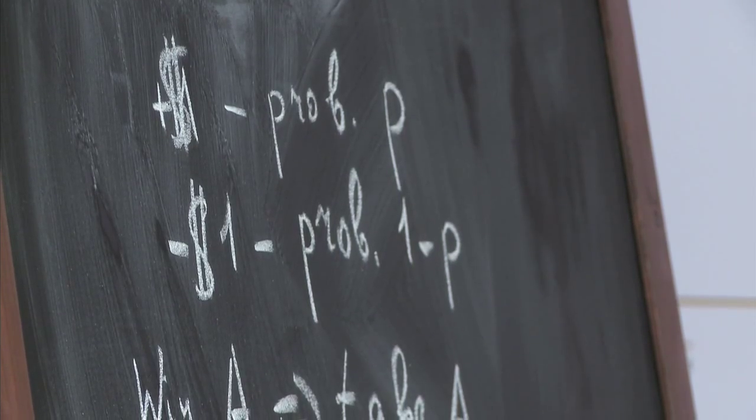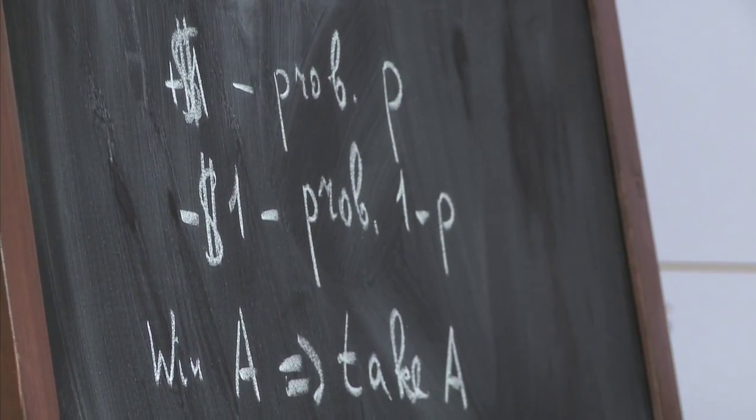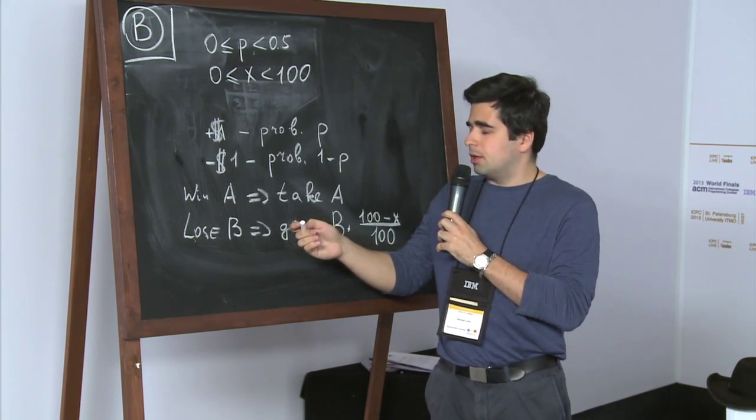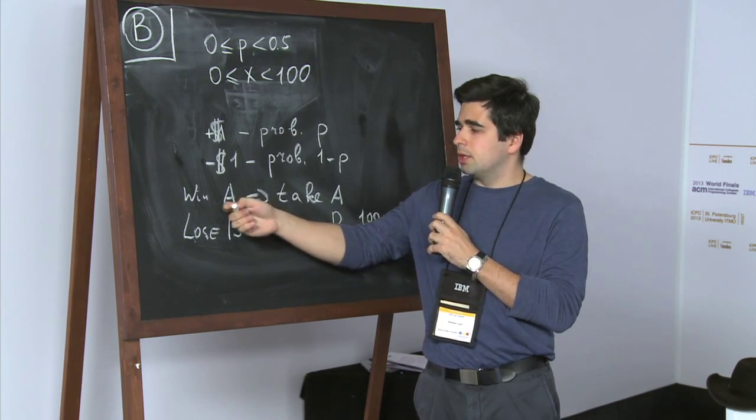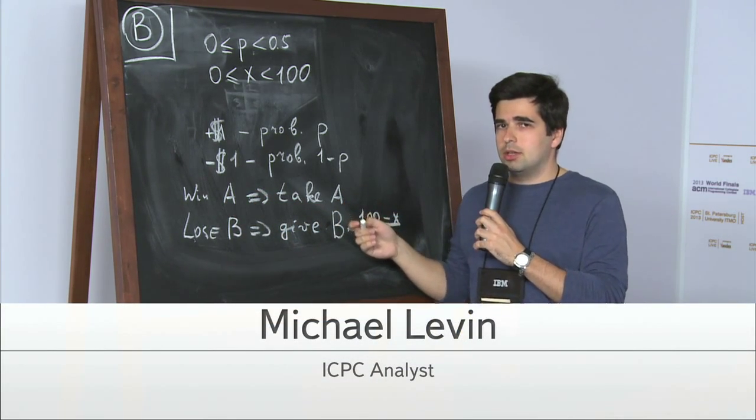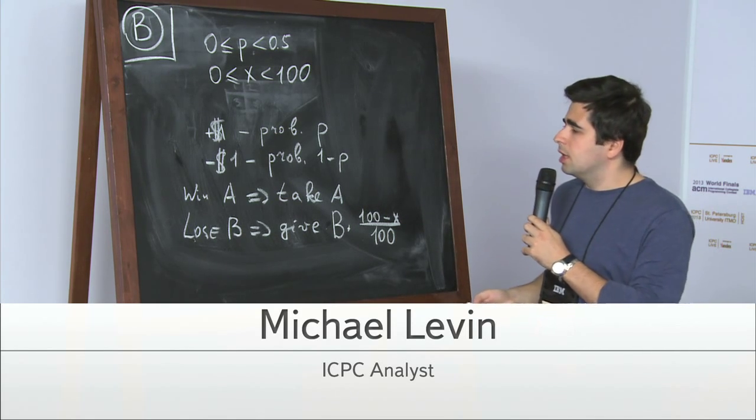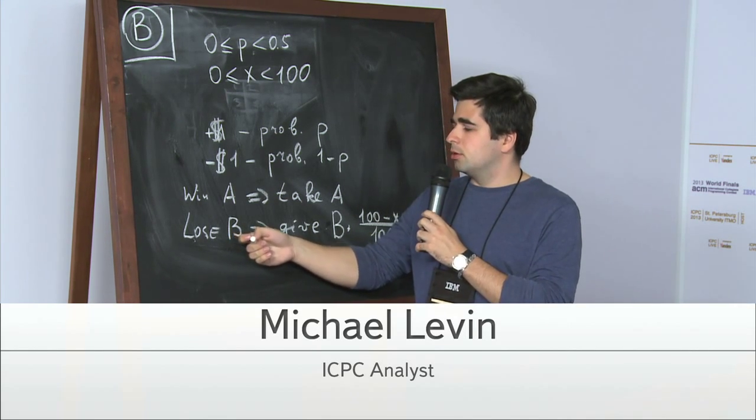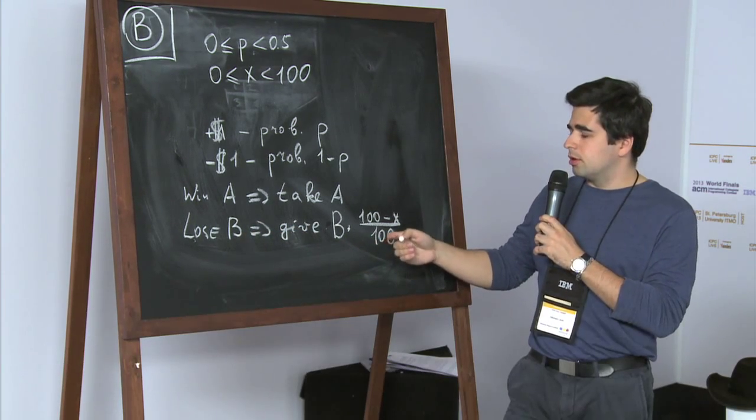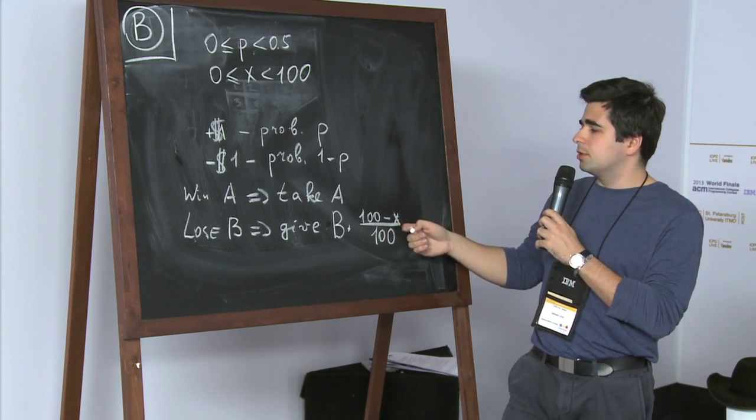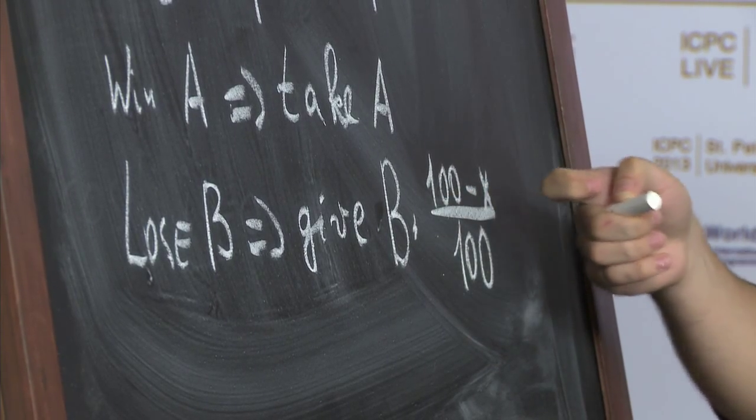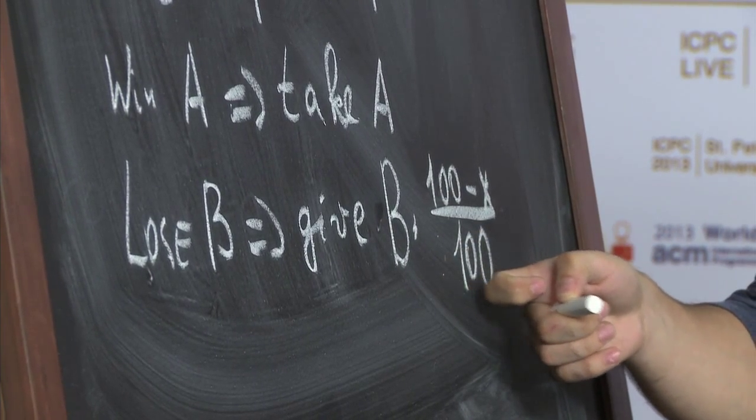He can play this game as long as he wants, but he has one advantage. If at the moment when he stops he has won some money, for example A dollars, then he takes all A and he has won this. And if he loses some money, for example if he loses B dollars, then he doesn't have to give B dollars to the casino. He has a discount of X percent, so he will give out not B but B multiplied by 100 minus X divided by 100.